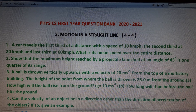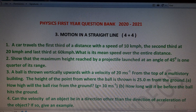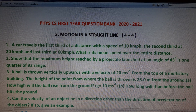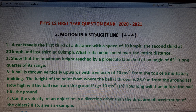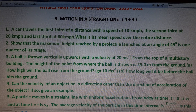In Chapter 3 (Motion in a Straight Line), the first question: a car travels the first third of a distance at 10 km/h, the second third at 20 km/h, and the last third at 60 km/h — what is the mean speed over the entire journey? The second important question: show that the maximum height reached by a projectile launched at 45 degrees is one-quarter of its range.